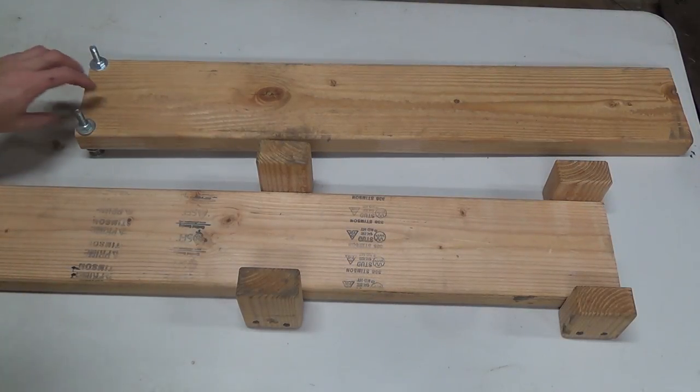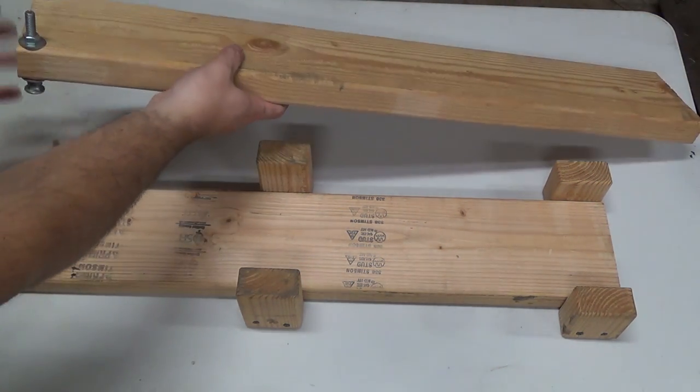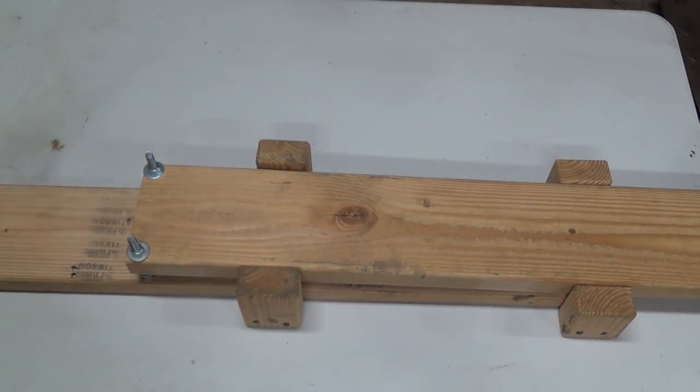I'm using an adjustable flattening jig set to three quarters of an inch for tapering the limbs of the bow, though you could also use a two by four with three quarter inch tall spacers.